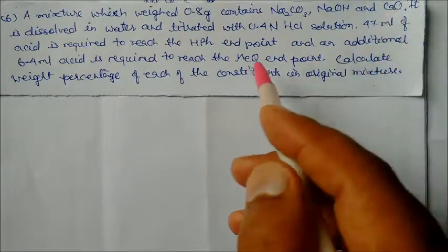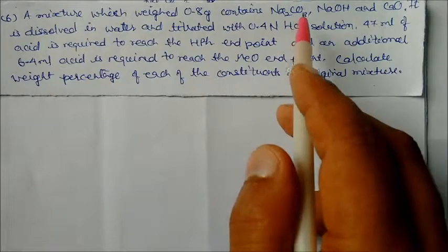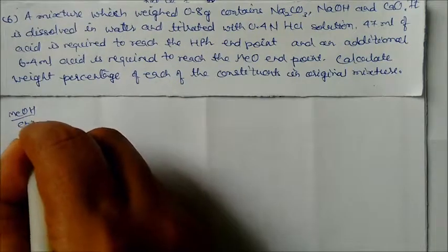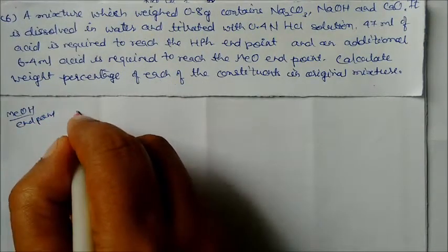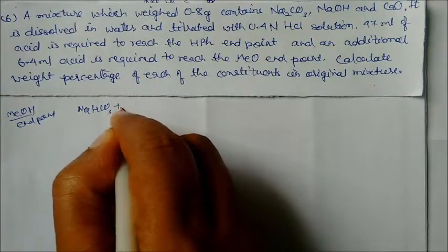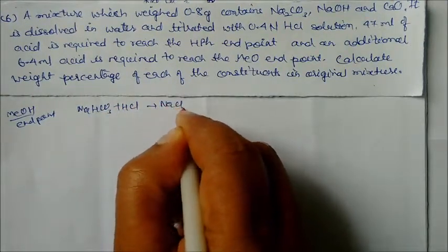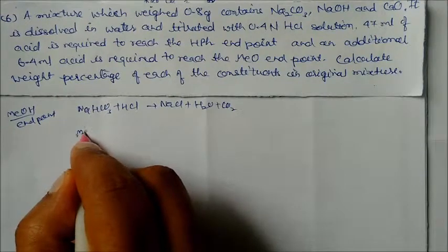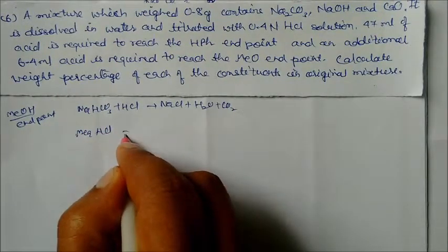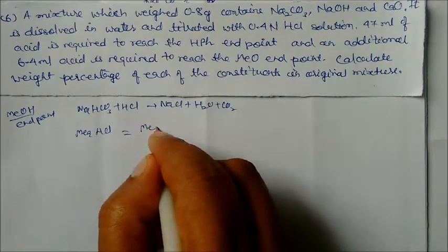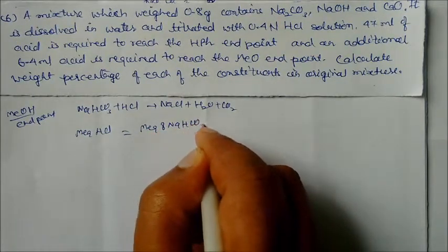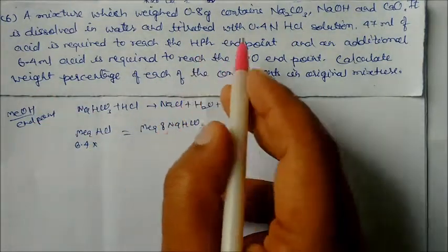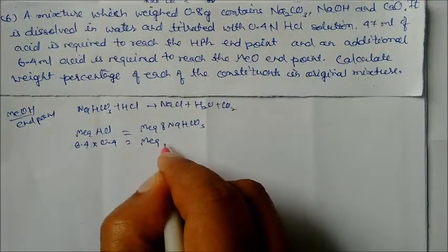From the methyl orange end point, sodium bicarbonate reacts with HCl to give NaCl + H₂O + CO₂. We write: milliequivalents of HCl = milliequivalents of sodium bicarbonate. The end point uses 6.4 ml at 0.4 N normality. So: 6.4 × 0.4 = milliequivalents of sodium bicarbonate.